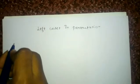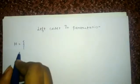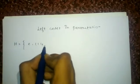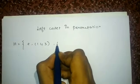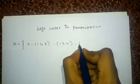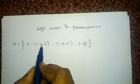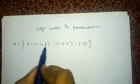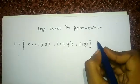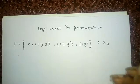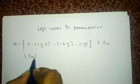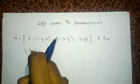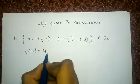Let me take a set H which consists of 4 permutations: E, (143), (134), and (13). Since the highest number in this set of 4 permutations is 4, this belongs to S4. I have provided a link in the description box on how to find the order of S4, which is 4 factorial.